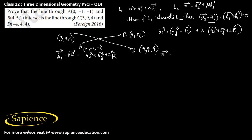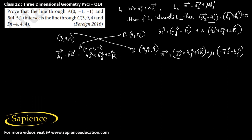For line CD, a2 vector will be 3i cap plus 9j cap plus 4k cap, plus mu times b2 vector. The direction vector CD is: minus 4 minus 3 gives minus 7i cap, then 4 minus 9 gives minus 5j cap, and 4 minus 4 gives 0k cap.